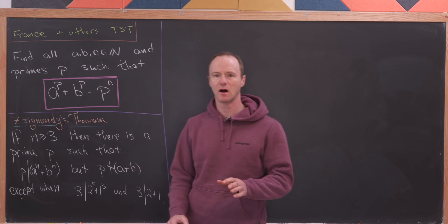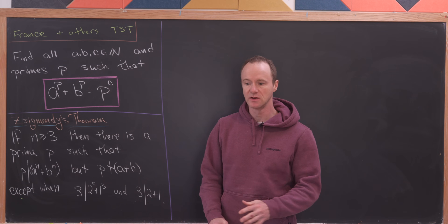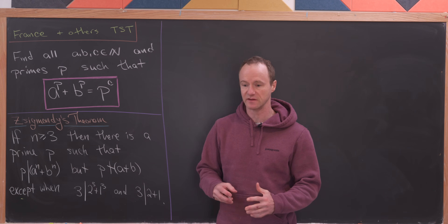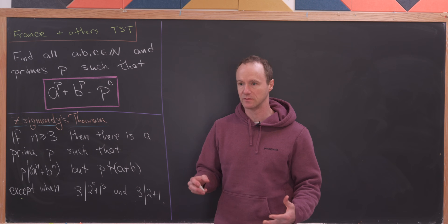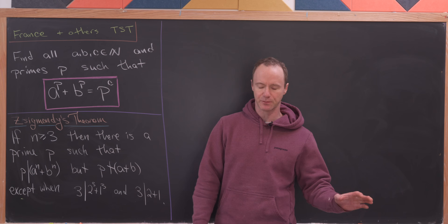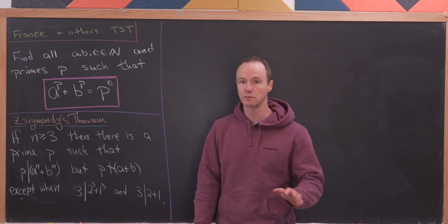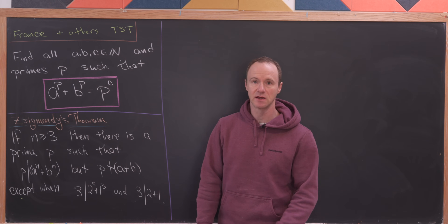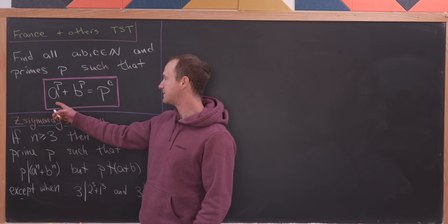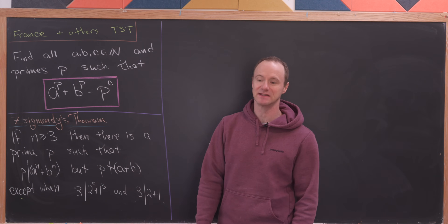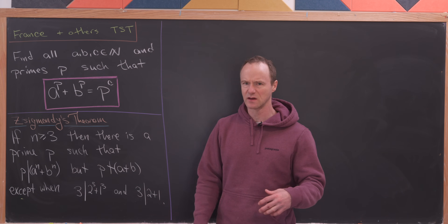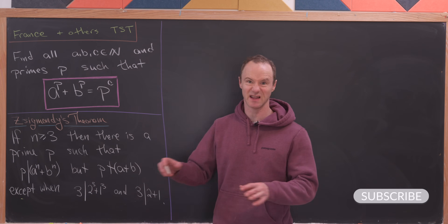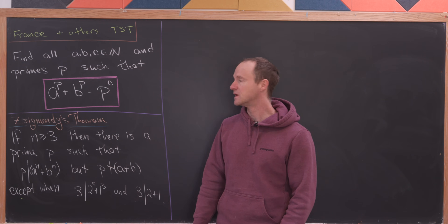Today we're going to look at a problem famously on several different team selection tests for math Olympiad teams from several different countries. The purpose of this problem is to ensure that students know about a really important result in problem-solving contests. The problem is to find all natural numbers a, b, and c and prime numbers p so that a to the p plus b to the p is equal to p to the c. Notice it starts to look like something related to Fermat's last theorem, but instead of c to the p on the right-hand side, the exponentiation is flipped — it's p to the c.